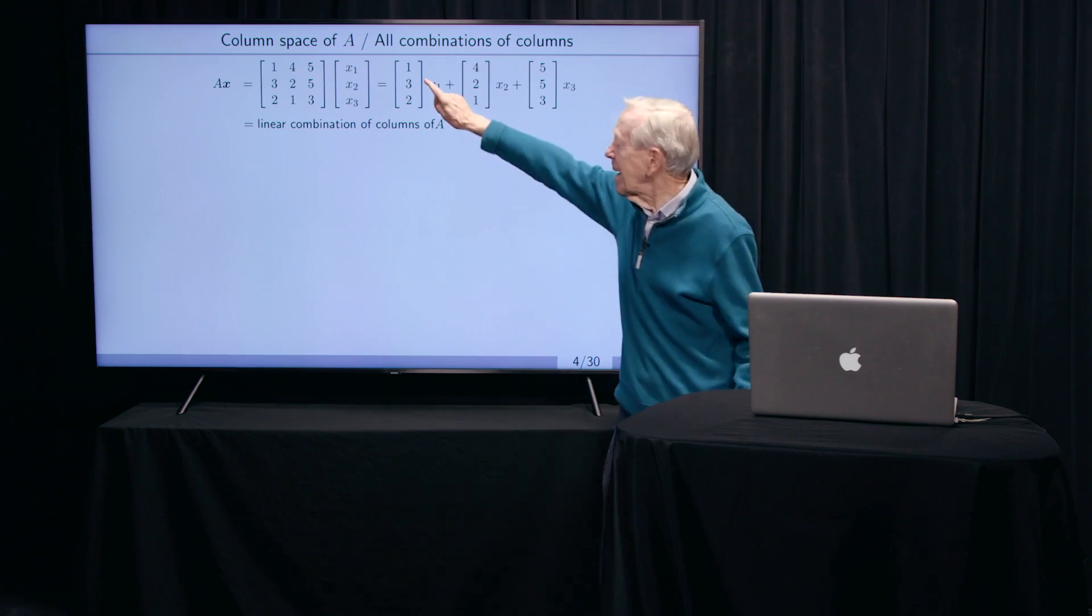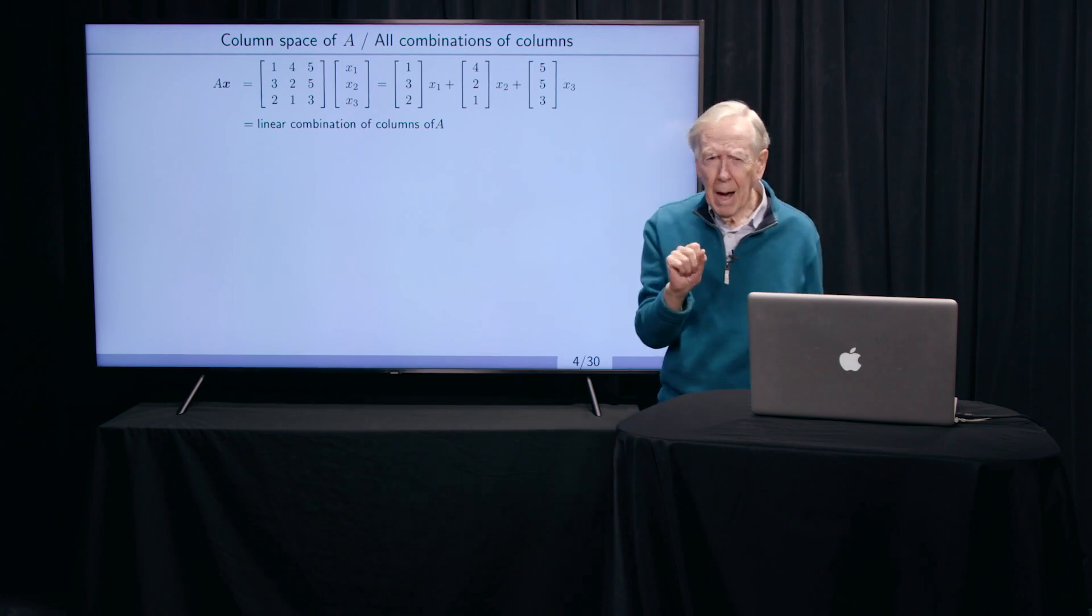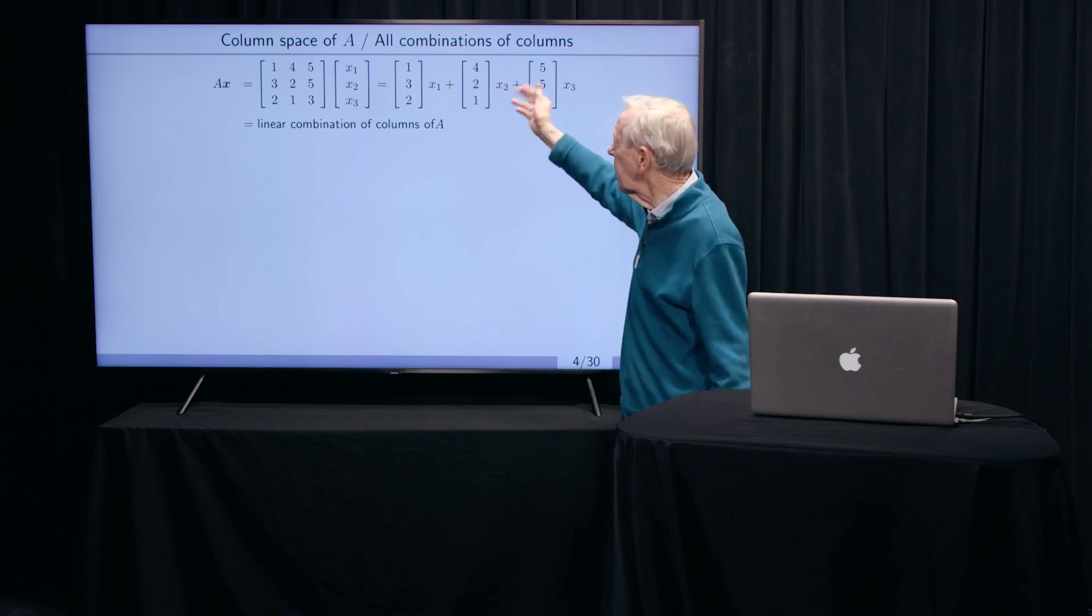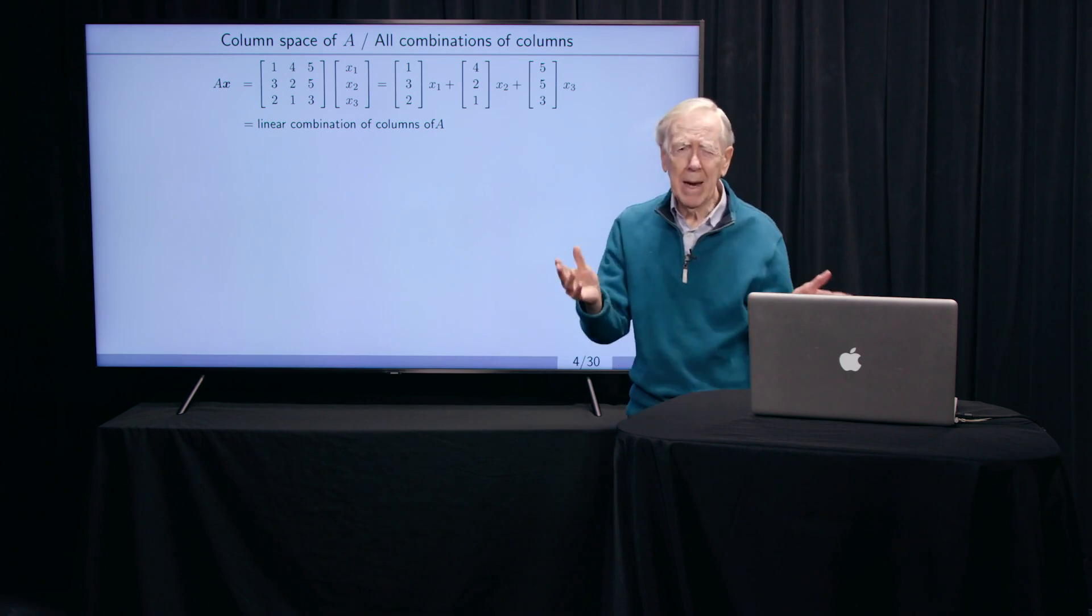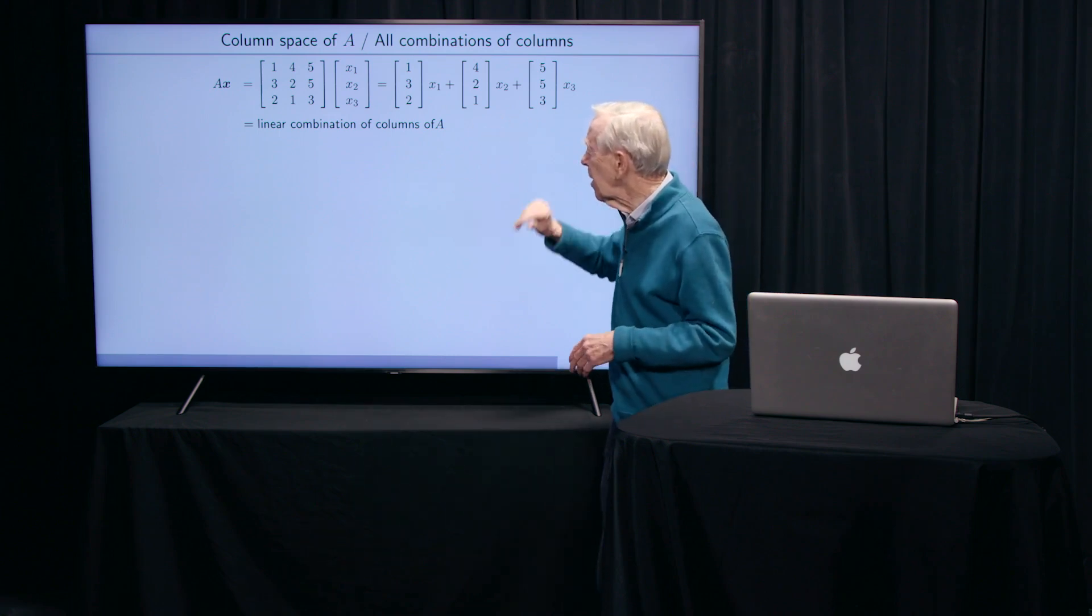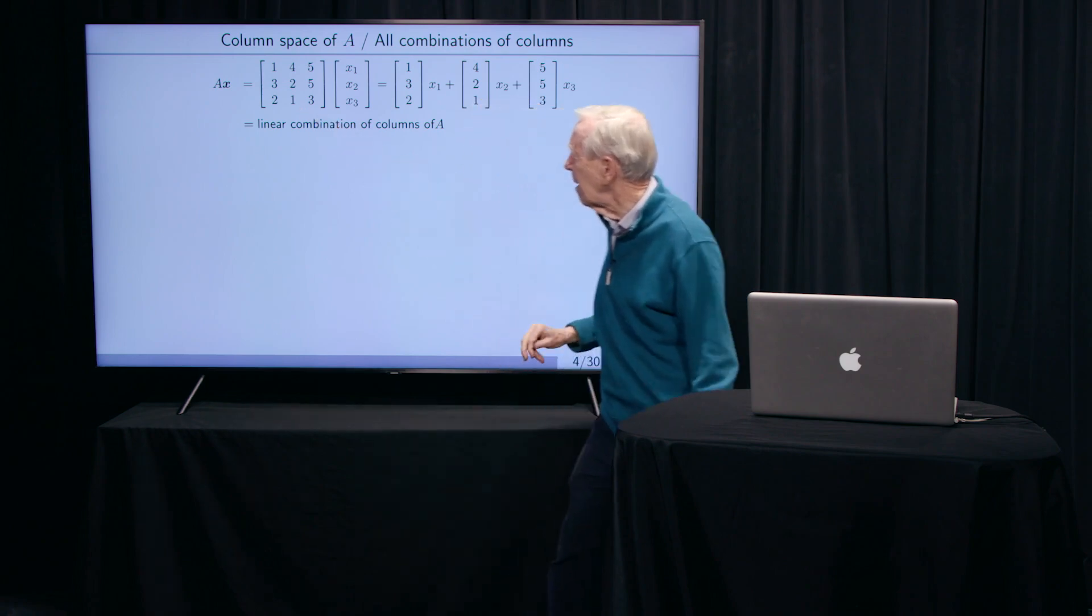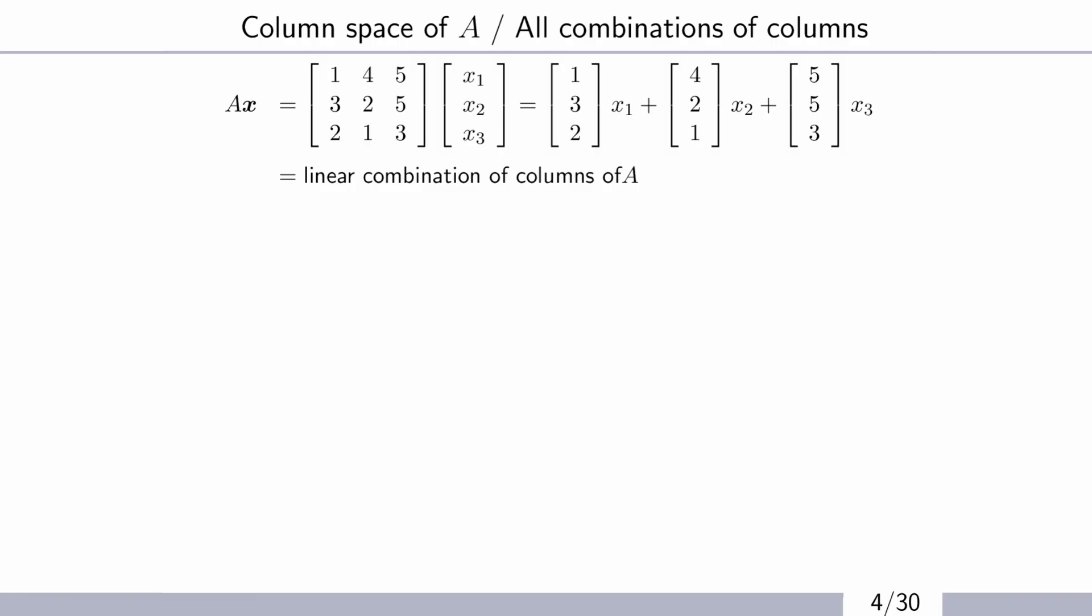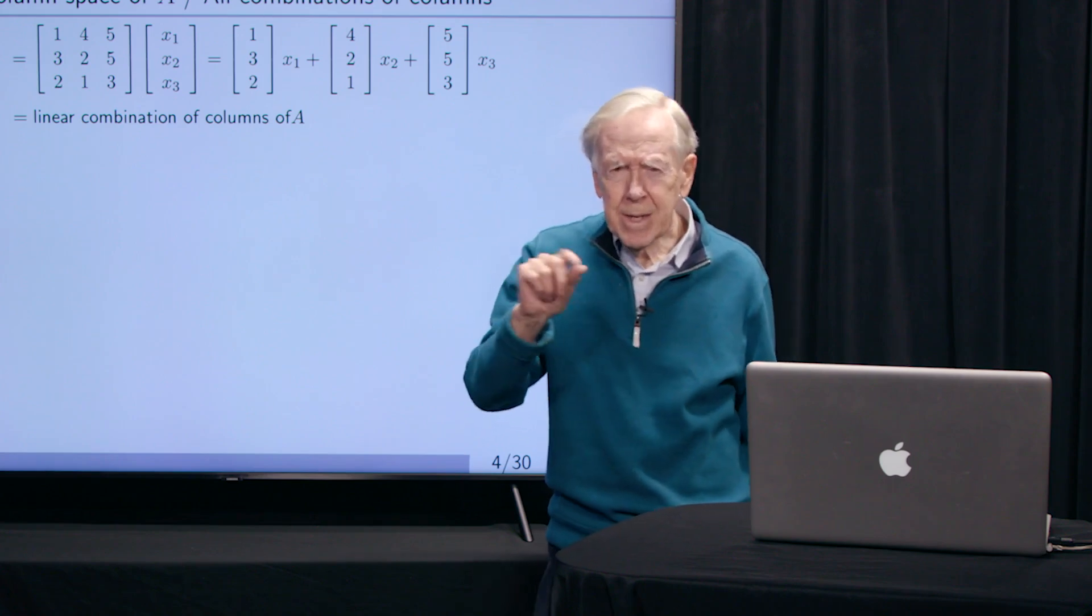And now the big idea is in that top line. I want to think of all combinations. So this is one particular combination with a particular x1 and x2 and x3. But now I let every, I think of every x1 and x2 and x3, all the vectors that I could get. Of course, I could get the first column by taking 1 and 0 and 0. But it's really mixtures of the columns that this produces. And it fills out, in this case, a whole plane in three dimensions.